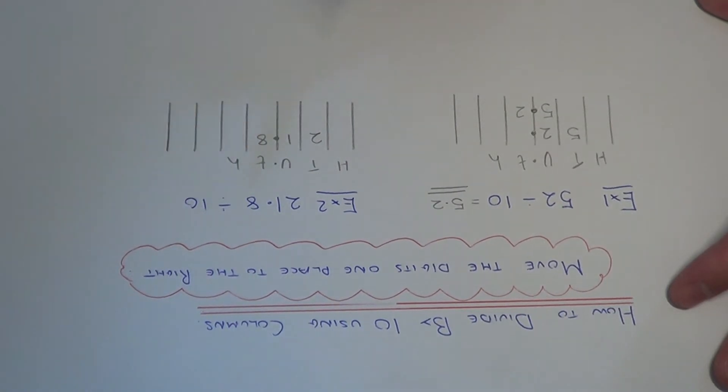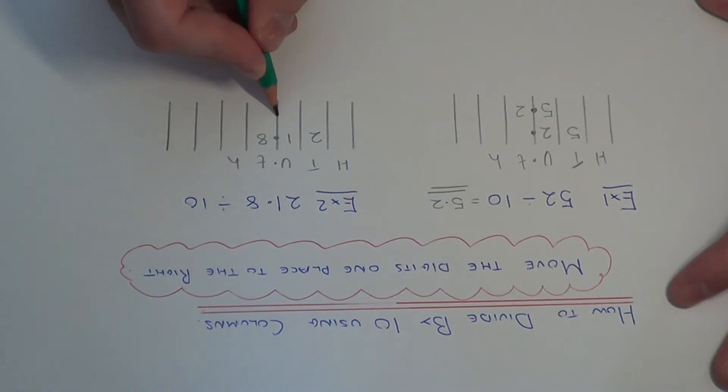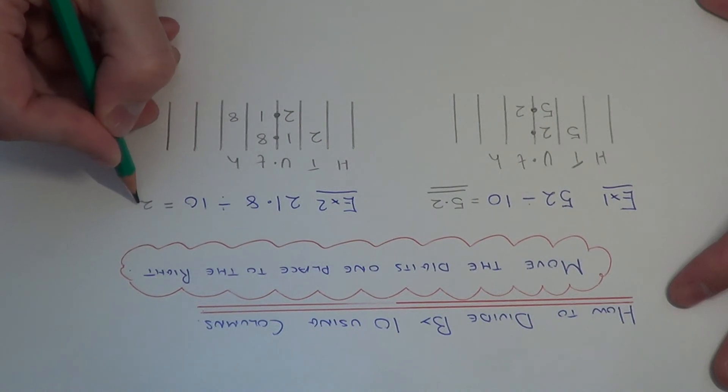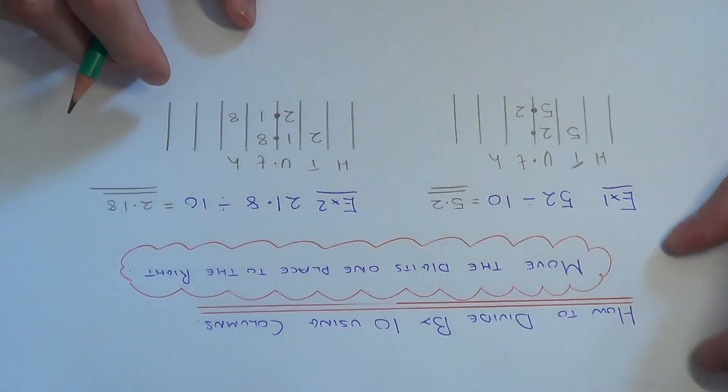We're dividing by 10, so all the numbers move one place to the right. We'll put the decimal point in first so that doesn't move. The 8 will go one place to the right. The 1 will go one place to the right. And the 2 will go one place to the right. So we end up with the final answer of 2.18.